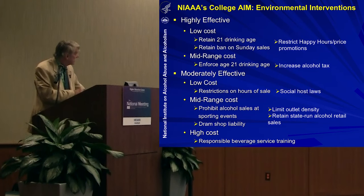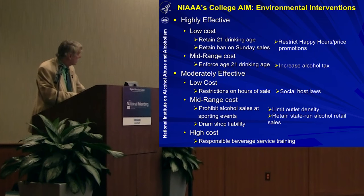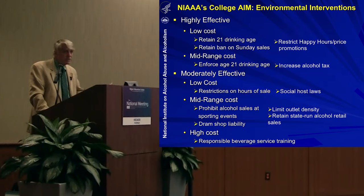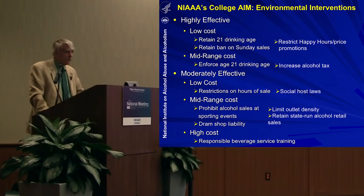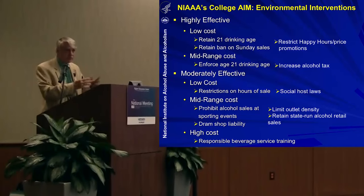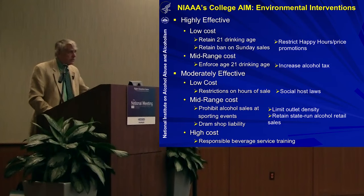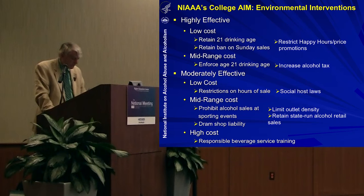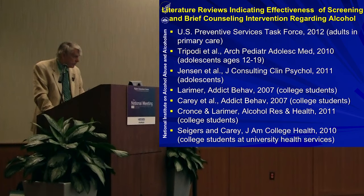In terms of environmental interventions, the low-cost highly effective ones include retaining the illegal drinking age of 21 and retaining bans on happy hours and Sunday sales. What we tried to do was create a menu, because not all colleges and universities are the same — their students and environments vary — but the idea was to give you folks the best set of available options to pick from to reduce problems on your campus.